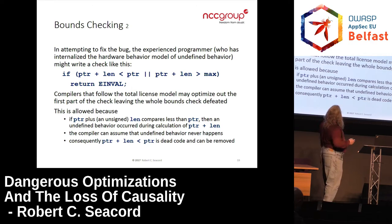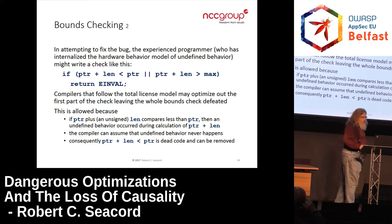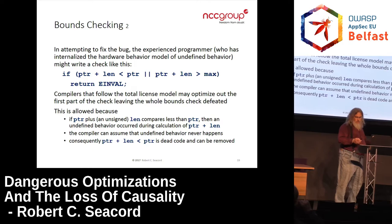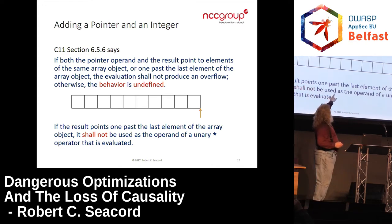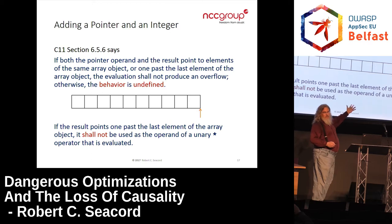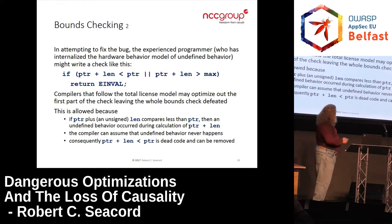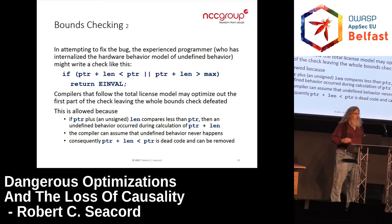A compiler that follows a total license model, like GCC and now Clang, may optimize out the first part of this check, leaving the bounds check defeated. The reason: if pointer plus an unsigned len compares less than pointer, then undefined behavior has occurred — you just tried to form a pointer outside the bounds of the array. By the language in the standard, that makes it undefined behavior. So the compiler can assume undefined behavior doesn't occur and remove that code as dead code.